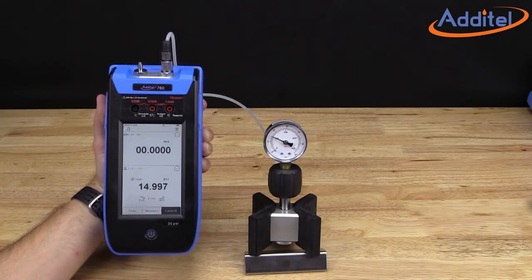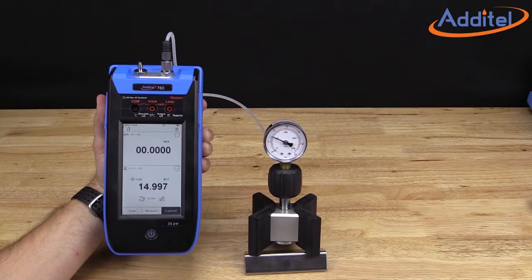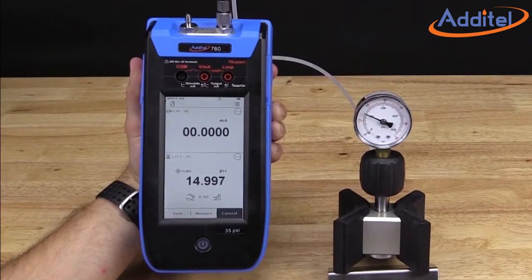Weighing in at just under 4 pounds, the Additel ADT760 is the world's first fully self-contained handheld pressure calibrator.